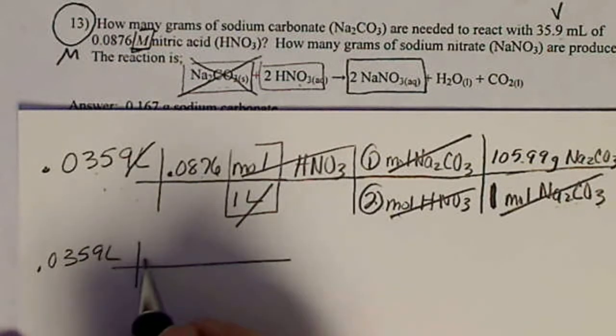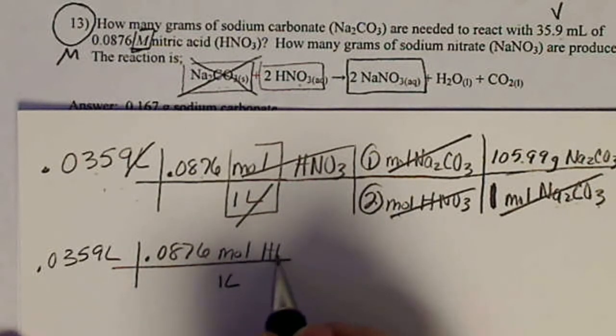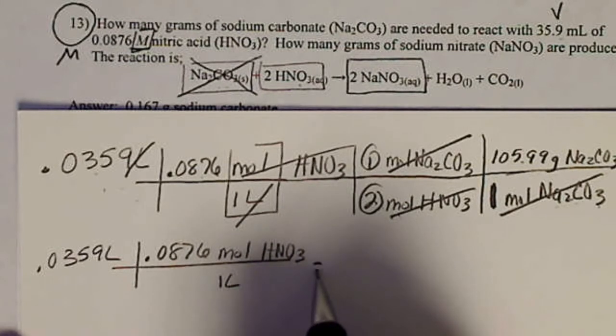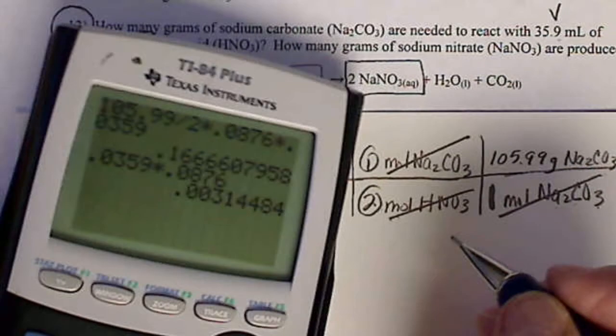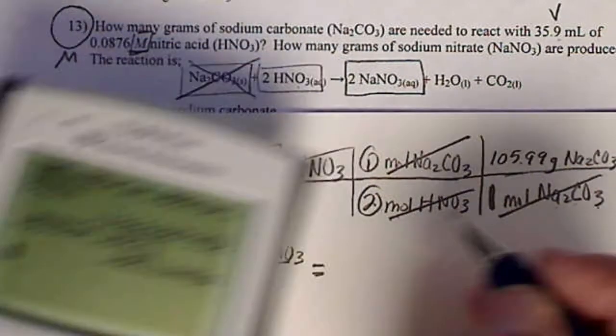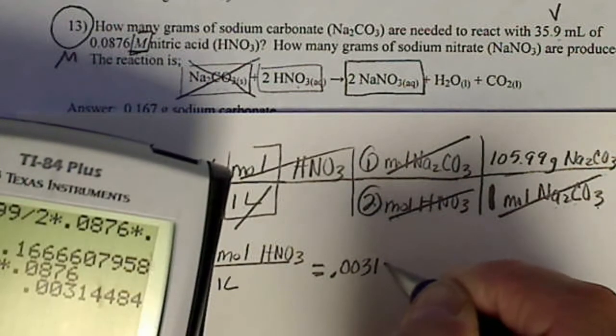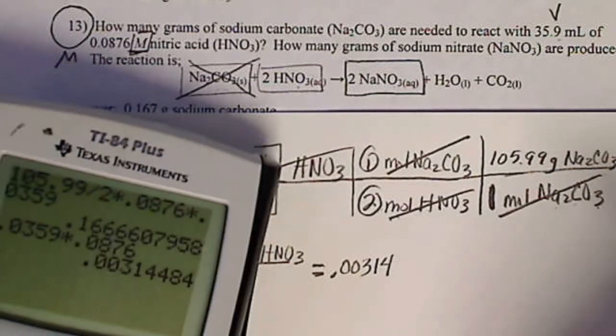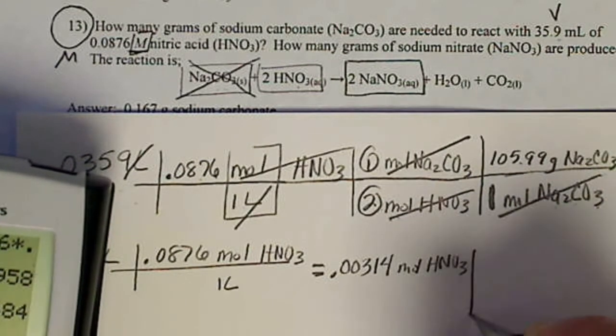So the second part's going to look just the same at the beginning. That many liters times the molarity, 0.0876. That's moles per one liter of HNO3. If you would like, you could stop and calculate that. We really don't need to do that. We can keep going. If we did that, we'd have this small number, 0.00314. The problem with stopping is that we've got to, I'm going to leave this number in the calculator, and this is moles of HNO3.